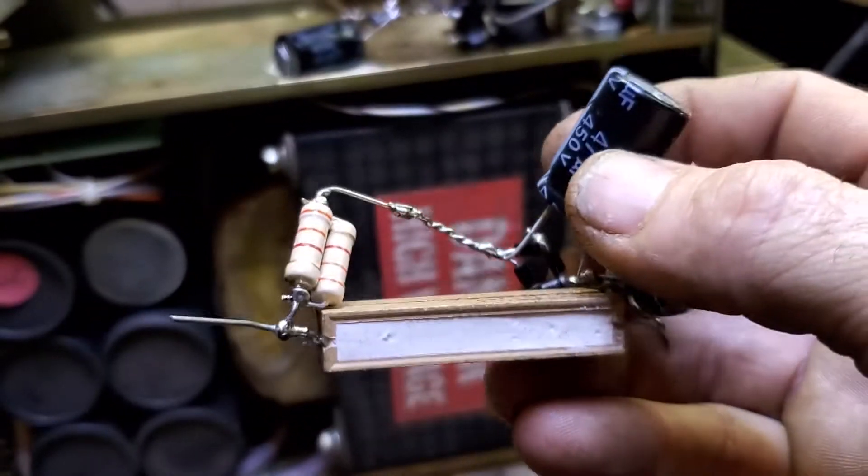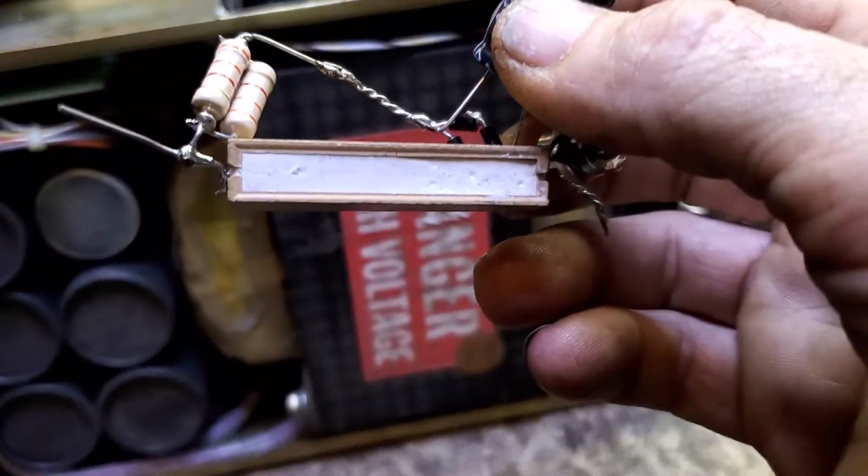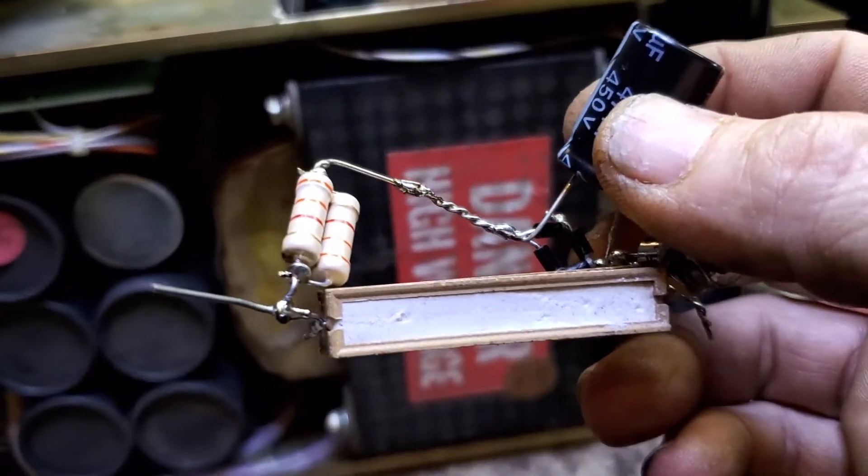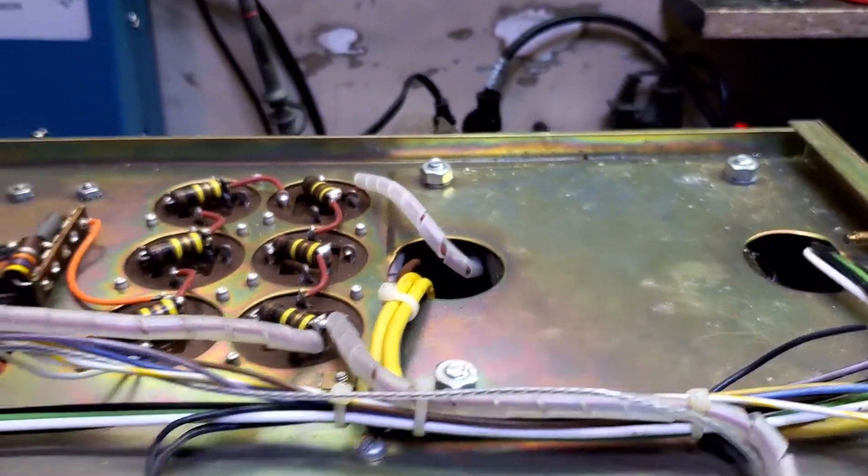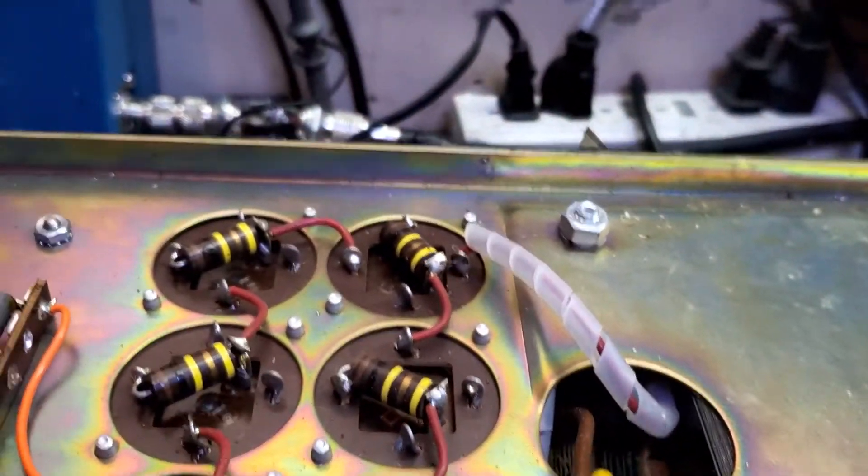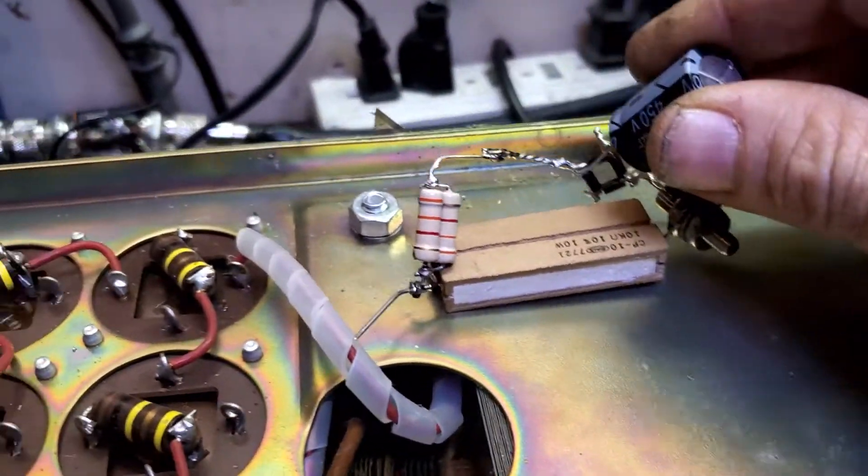Now my challenge is I have to get this active bias circuit installed somewhere in here where it's not going to aggravate anything else. If you've ever seen the inside of a Dentron, spacing is very limited. There's my depth for the bottom - it's about an inch. Well, this circuit ain't going to sit in an inch, so I'm going to have to modify it.